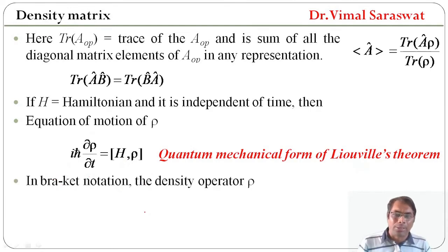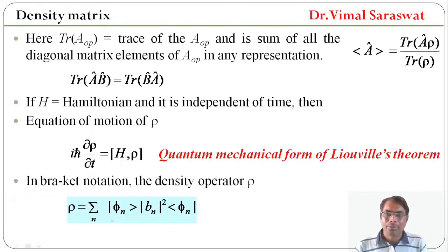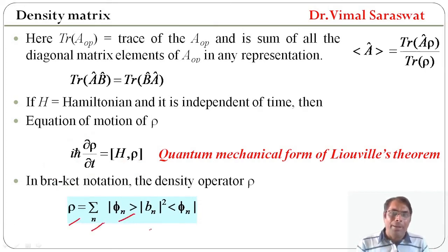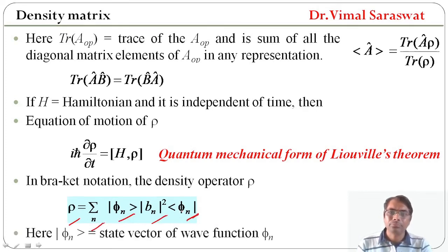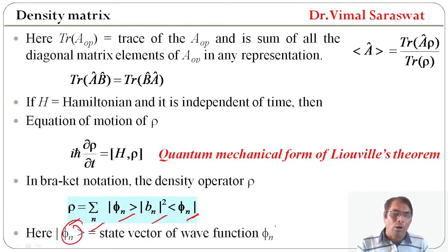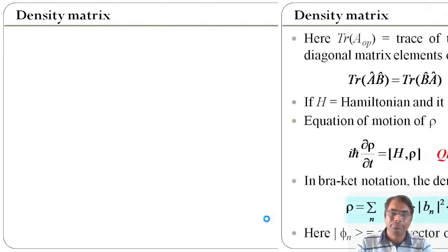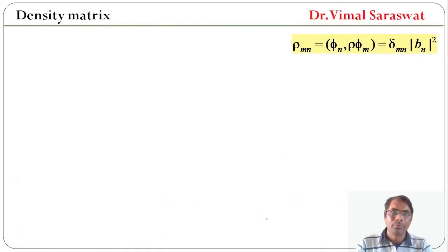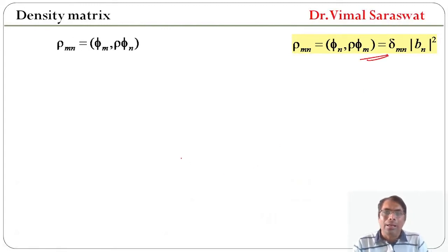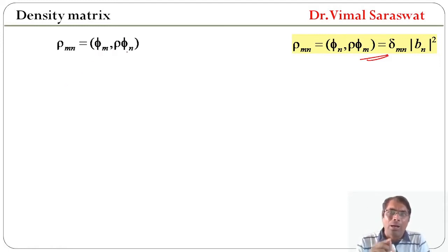In bracket notation the density operator rho is given by rho equal to sigma_n |phi_n> |b_n|^2 <phi_n|. Here |phi_n> is the state vector of a function phi_n. Since rho_mn equal to <phi_n | rho | phi_n>.